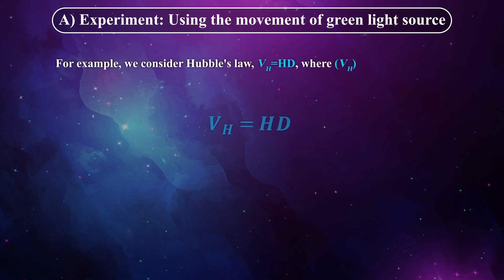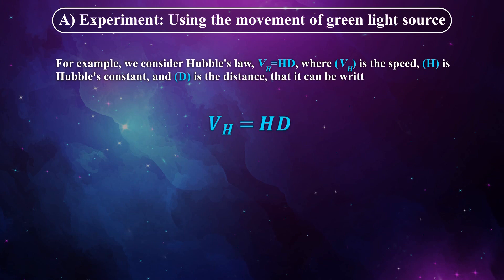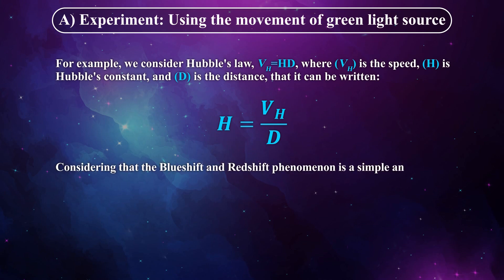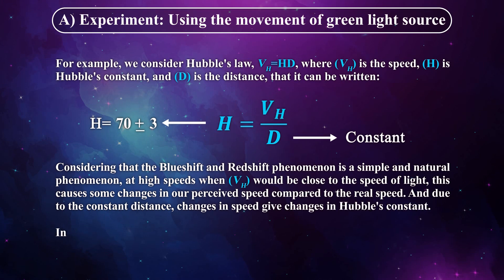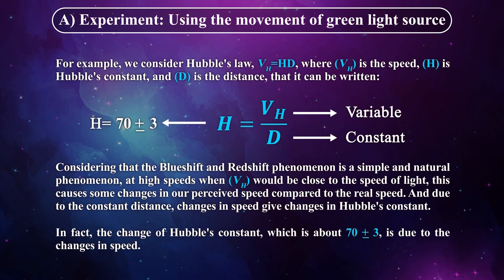For example, we consider Hubble's law V_H equals HD, where V_H is the speed, H is Hubble's constant, and D is the distance. Considering that the blueshift and redshift phenomenon is a simple and natural phenomenon at high speeds when V_H would be close to the speed of light, this causes some changes in our perceived speed compared to the real speed. And due to the constant distance, changes in speed give changes in Hubble's constant. In fact, the change of Hubble's constant, which is about 70 plus minus 3, is due to the changes in speed.